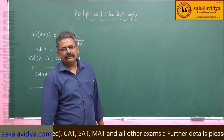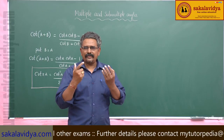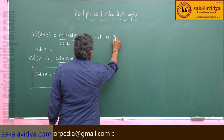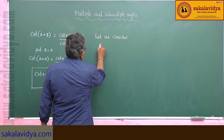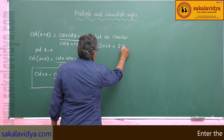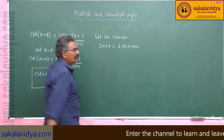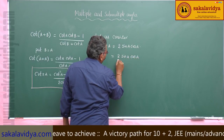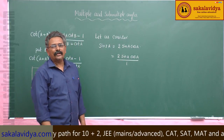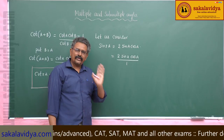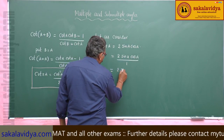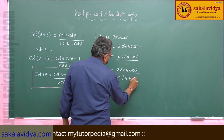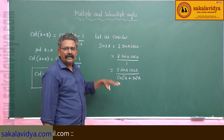Now let us write the value of sin 2A in terms of tan A. We know that sin 2A = 2 sin A cos A. For convenience, we can write this as 2 sin A cos A divided by 1. We then replace the 1 using the trigonometric identity cos²A + sin²A. So we have 2 sin A cos A divided by (cos²A + sin²A). Now divide both numerator and denominator by cos²A.